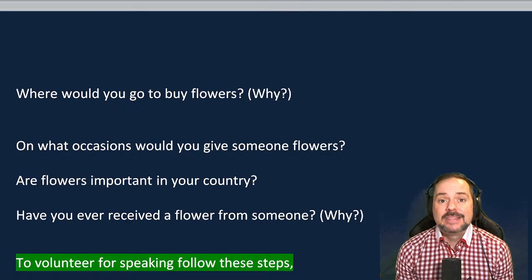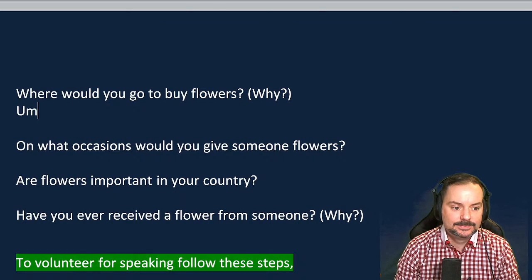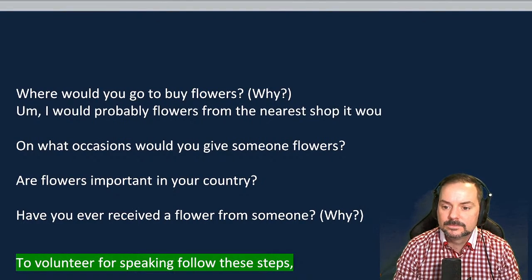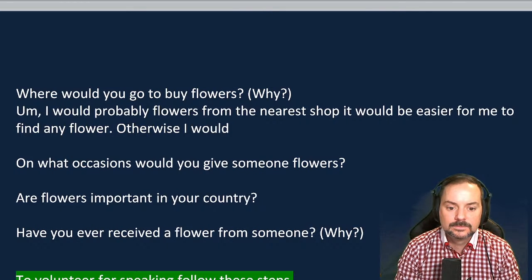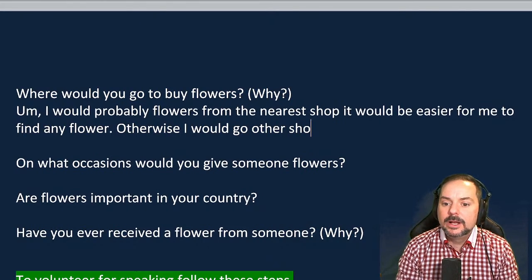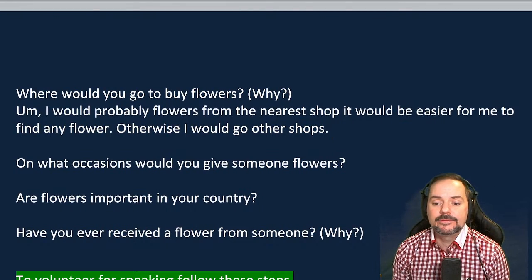Adrian asks: 'Where would you go to buy flowers?' Juman: 'I will probably buy flowers from my nearest shop. It would be easier for me to find a flower. Otherwise, there are some shops which are not near to my hometown, so it would not be very easy for me.' Feedback: about a band 6 to 6.5. Fluency is like a band seven, speaking fairly smoothly. But word choice needs improvement. What is a flower shop called in English? It's a florist — a florist specializes in selling flowers.